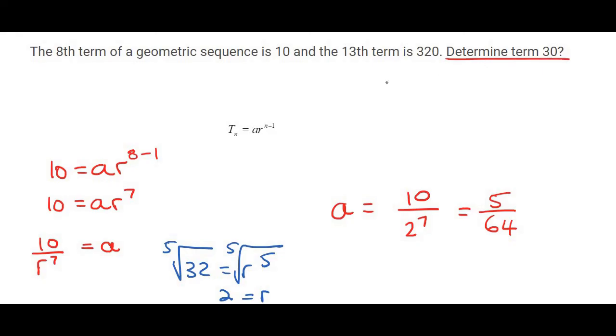Now, they would like term 30. So we can say term 30 is equal to A, which is 5 over 64, times by R, which we found as 2, to the power of 30 minus 1. You could then type that in on the calculator, and that should give you quite a big answer of 41,943,040.